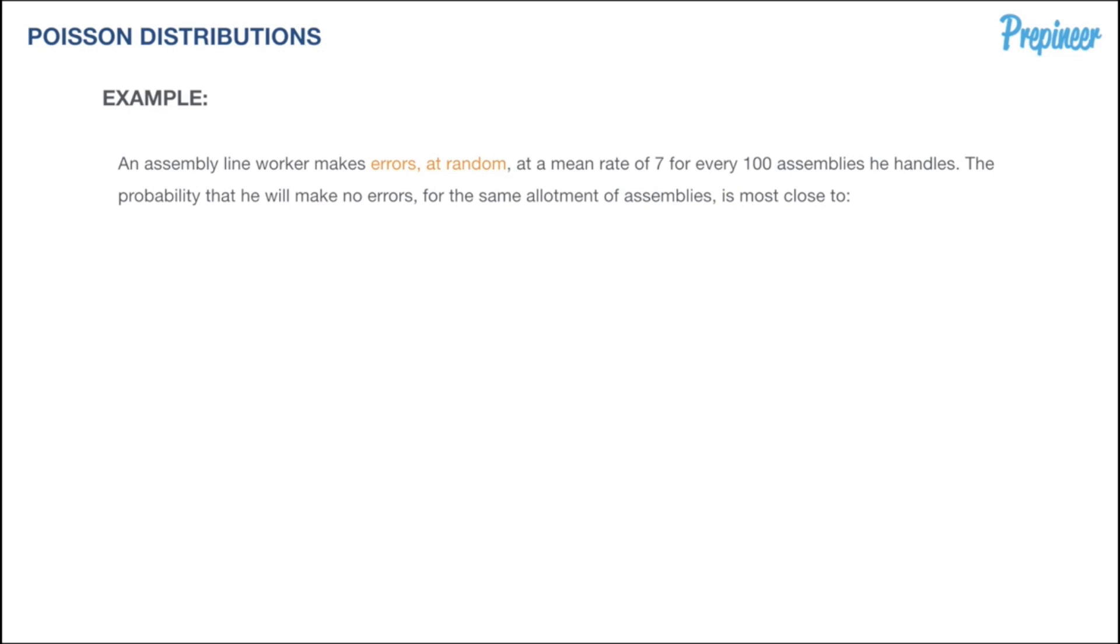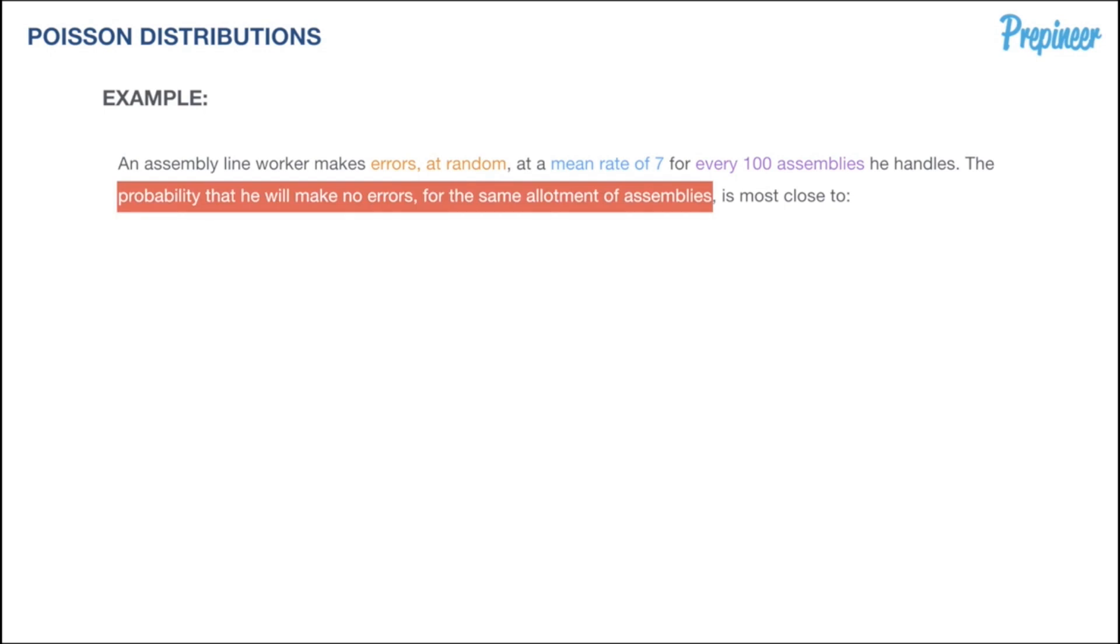We know the mean rate throughout the experiment will remain constant at a rate of 7 for every 100 assemblies he handles. So what is the probability that he makes no errors in this same allotment of 100 assemblies?